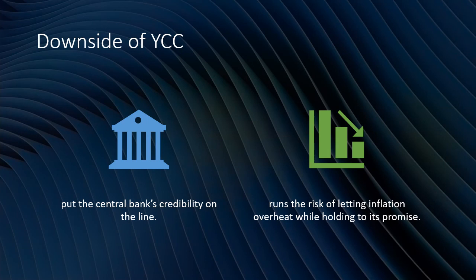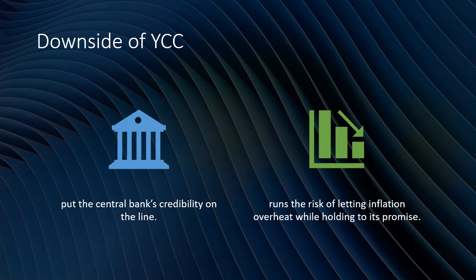Having said that, there are still some downsides of the YCC policy. For one, it will put the central bank's credibility on the line. For example, when there are signs of inflation, or when inflation does come, normally the central bank would and should increase the interest rate to curb the inflation. But under the YCC policy and its promise, what should the central bank do? They are going to face a dilemma. They will either have to let the inflation go and maintain their promise to keep the low bond yield, or they are going to break their promise to raise the interest rate to curb the inflation. And in either way, it's going to have a bad result — it will either jeopardize its credibility, or going to ruin the economy with inflation shooting up.